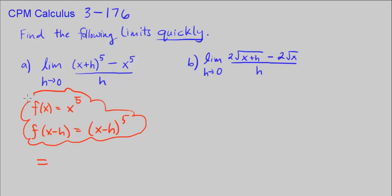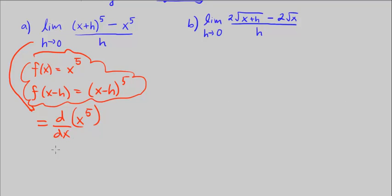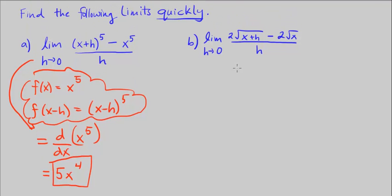Because then we know the limit as h approaches zero of this thing is equal to just the derivative with respect to x of x to the fifth. And what's the derivative of x to the fifth? Well, we can do the power rule quickly. Bring down that five, x subtract one. That is the derivative. And this is also the limit as h approaches zero of this expression here.